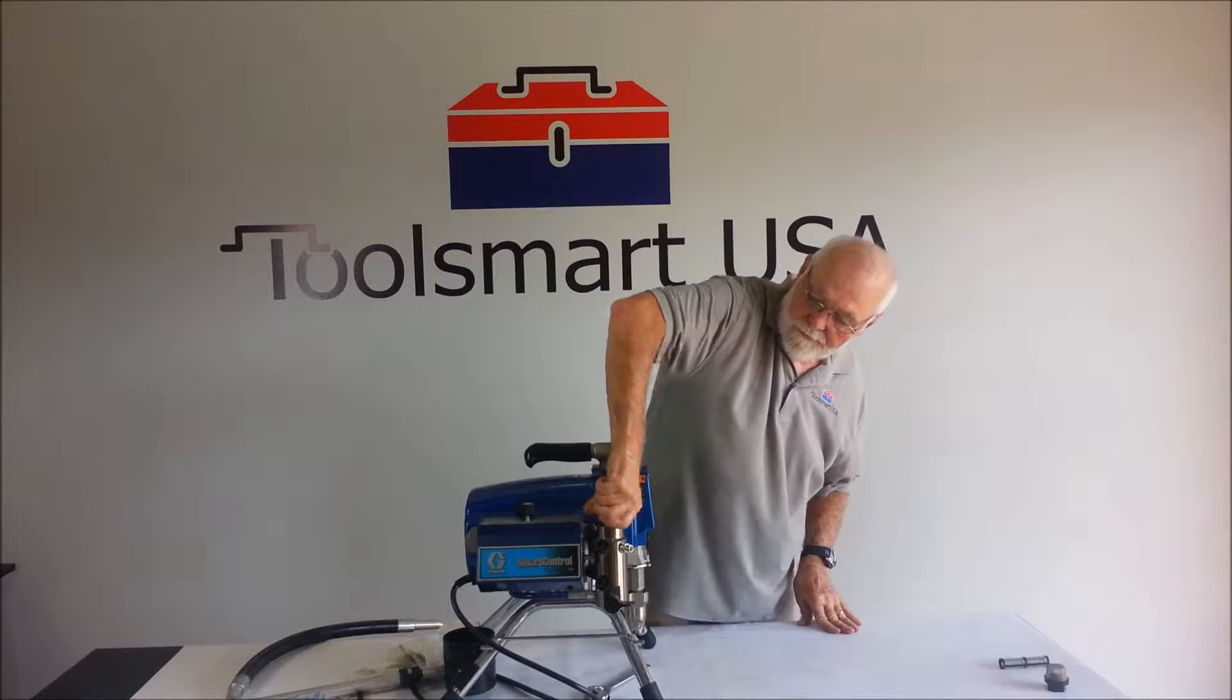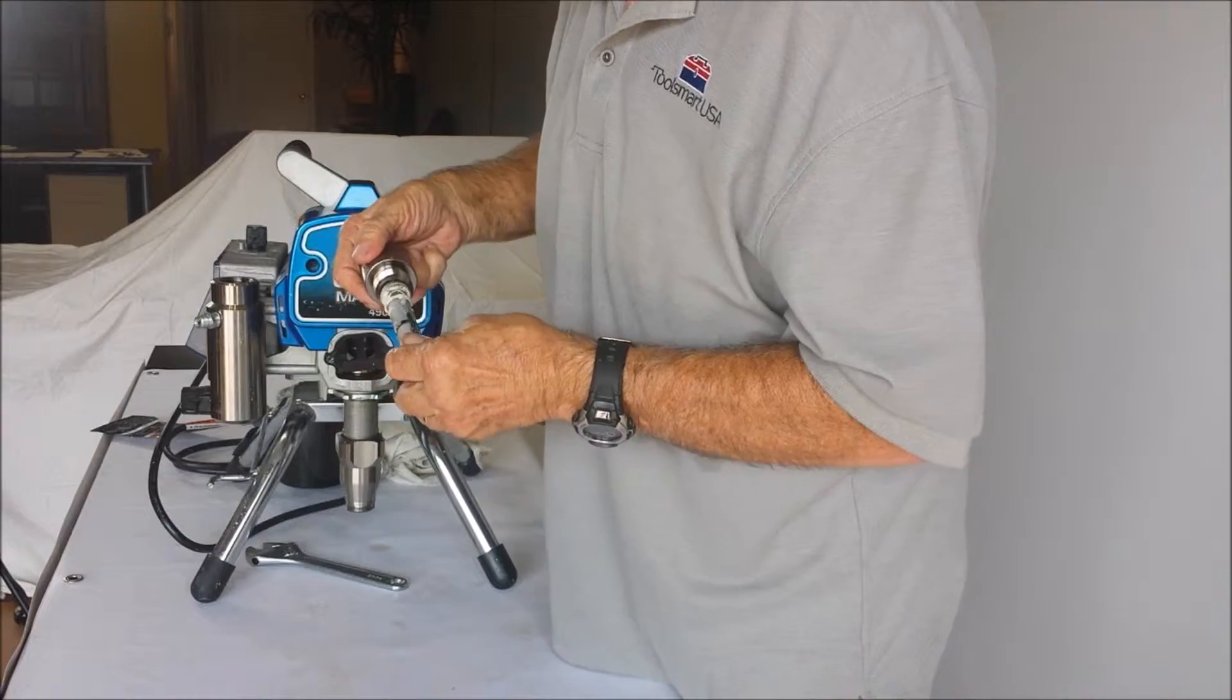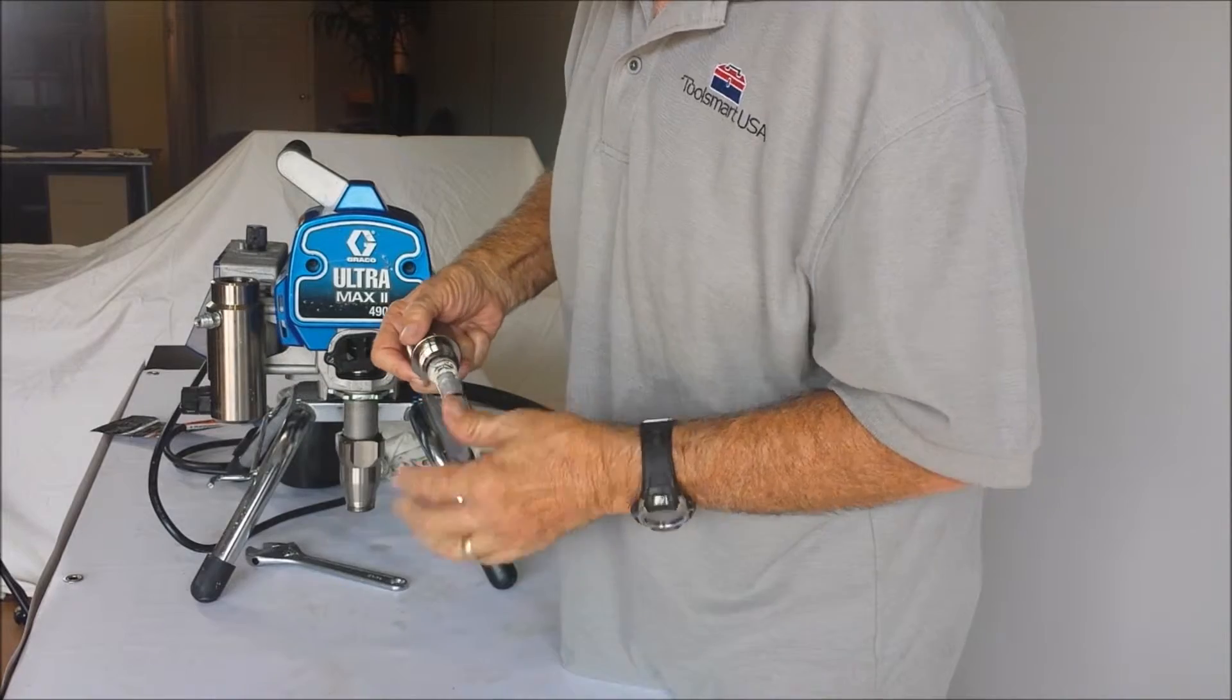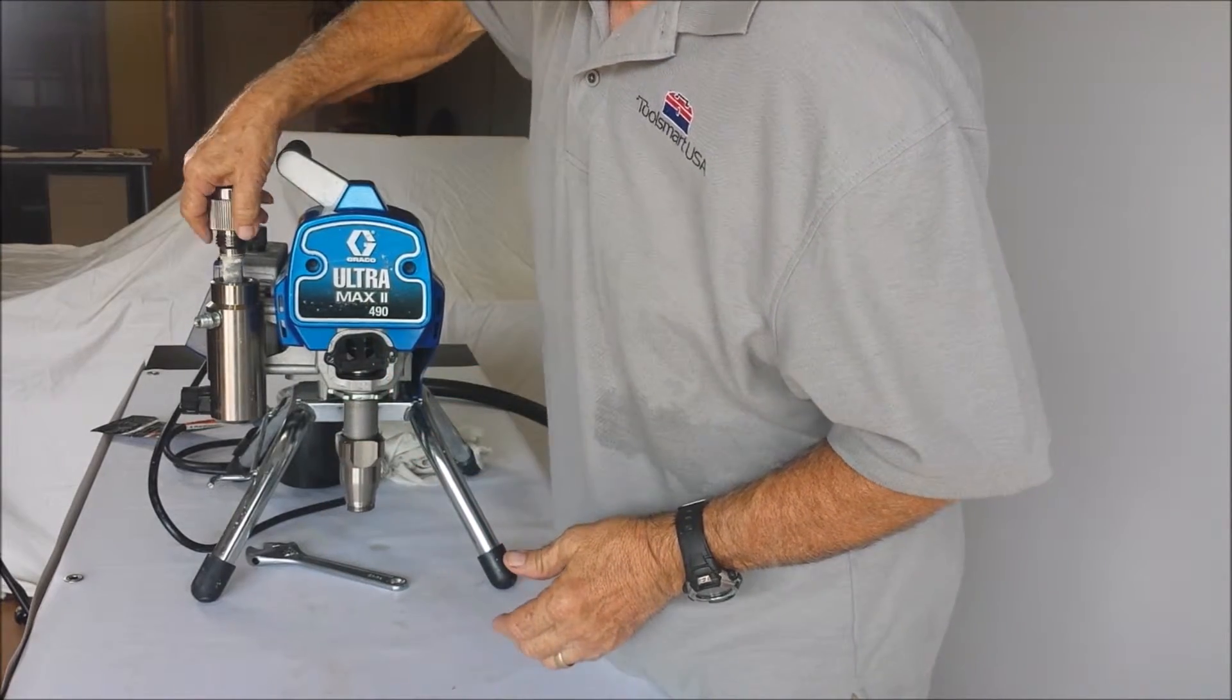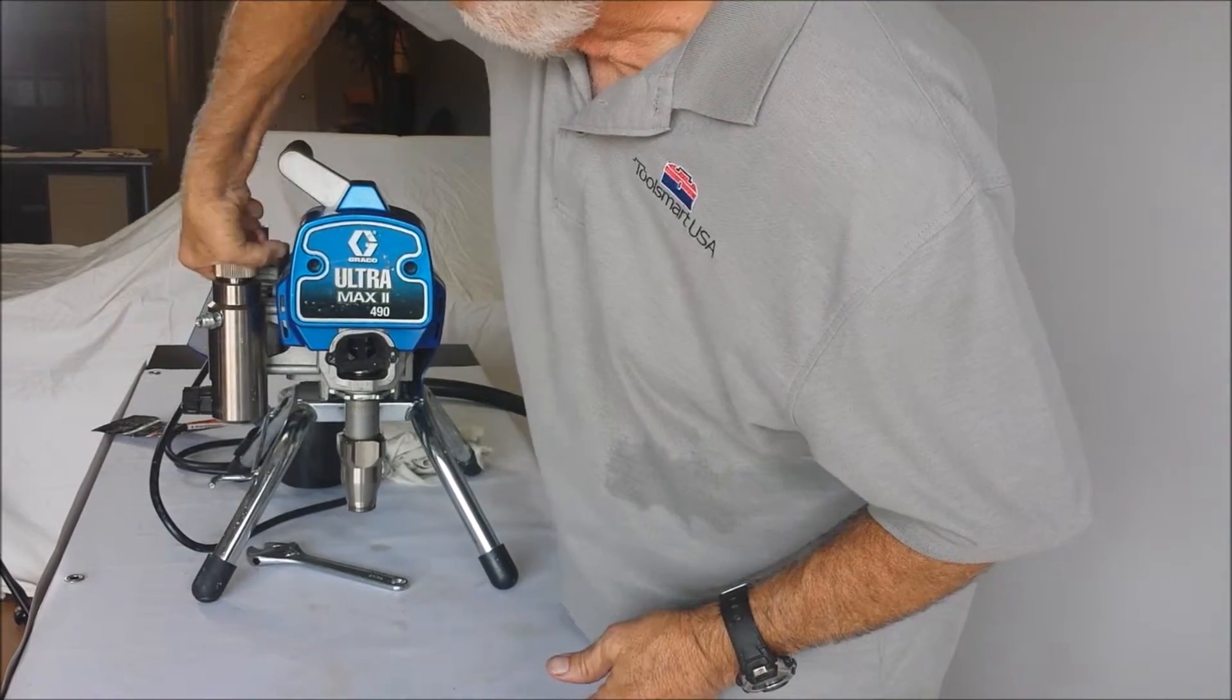First you want to loosen up the manifold filter cap. It should all be hand tight at the most. Pull out the old filter, which you can see now this one's got some paint on it. Put the new filter back on and screw it down. There again it should only need to be hand tight.